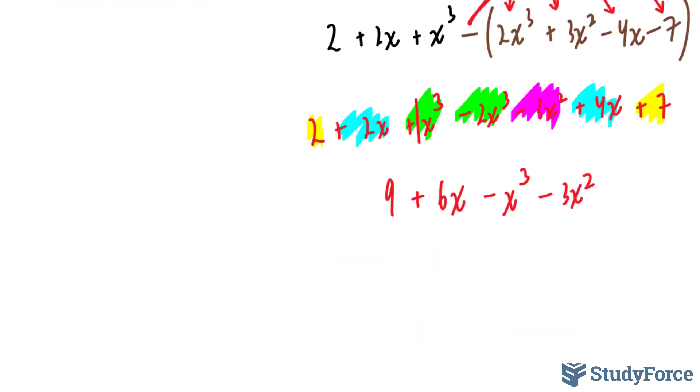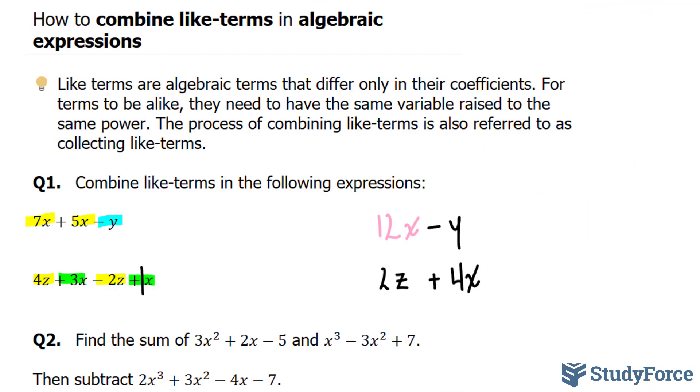Technically you're done. And most teachers will accept this answer. Although if you want to be professional, you can switch these around so that the highest degree is first. So you can write it as minus x to the power of 3 minus 3x squared plus 6x plus 9. And so there you have it. That is how to combine like terms in algebraic expressions.